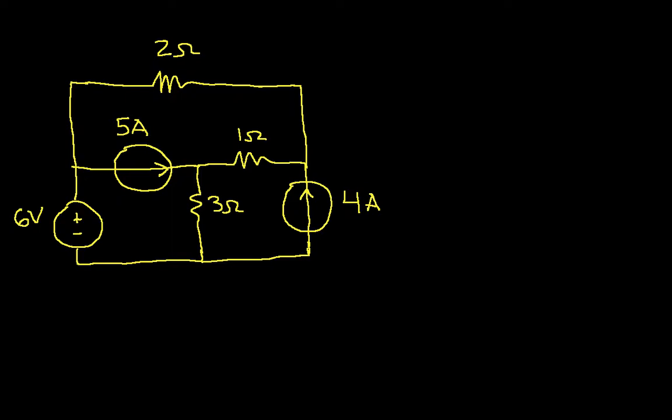If you remember from the introductory video, the steps in mesh analysis are first to identify the meshes. Meshes are the holes in the circuit, the areas that are surrounded by components. So if I look at this circuit, I have a mesh here, I have a second mesh here, and a third mesh here.